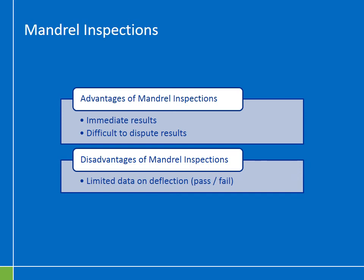Advantages of mandrel inspections: you get immediate results. If the mandrel goes all the way through, you immediately know the culvert has not deflected beyond the limit and it has passed acceptance testing. The results are also very difficult to dispute — if the mandrel gets stuck, it's hard to argue the pipe hasn't deflected beyond the gauged value. A disadvantage is that mandrel inspections give limited data on the extent of deflection — it is really a pass/fail test. A laser scan inspection will tell you exactly how deflected the pipe is to a tenth of a percent, providing much more information.